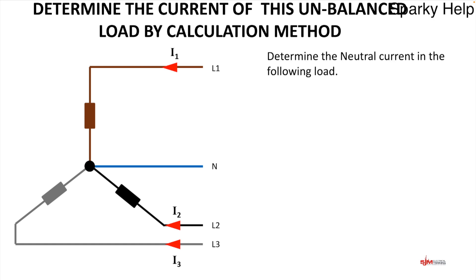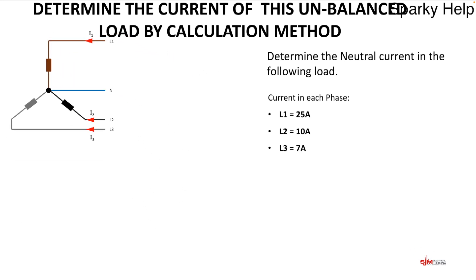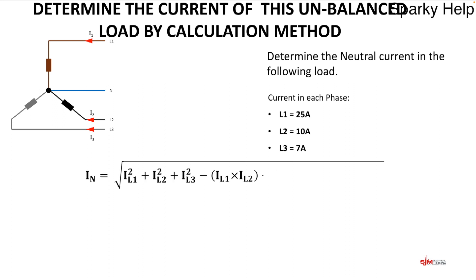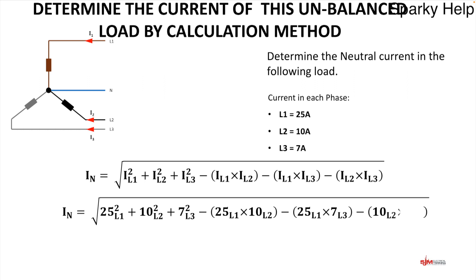Now let's calculate the neutral current for the unbalanced load: L1 = 25 A, L2 = 10 A, L3 = 7 A — the same values we used in the graphical method. Applying the formula gives In = 16.7 amps. We got 16.6 amps from the drawing, so the two methods are very close — well within tolerance. The calculation method is more accurate, provided you enter the numbers correctly, whereas the graphical method depends on the quality of your drawing.